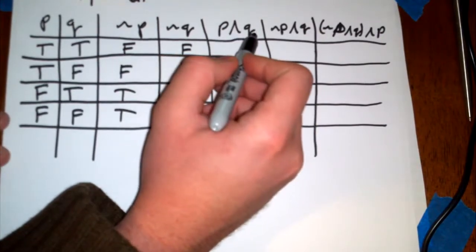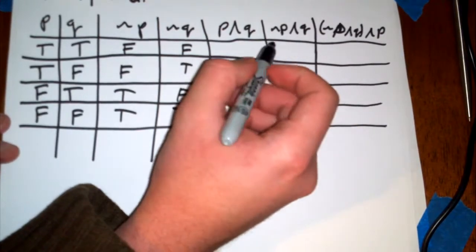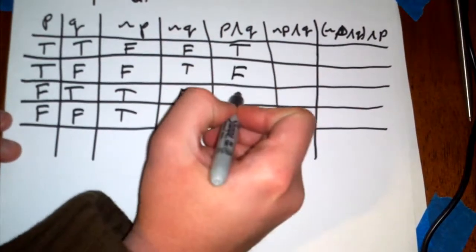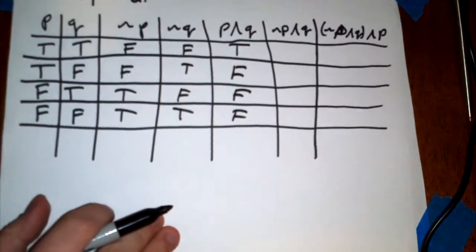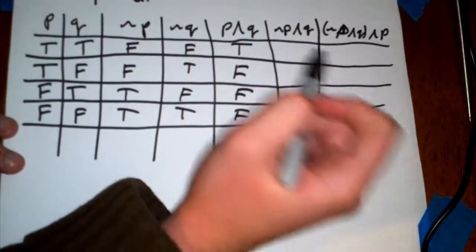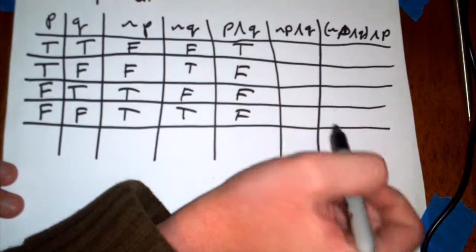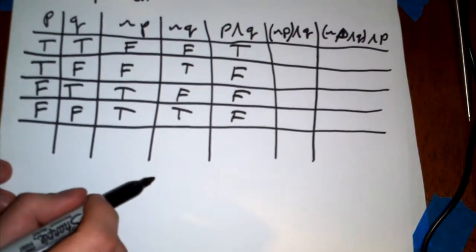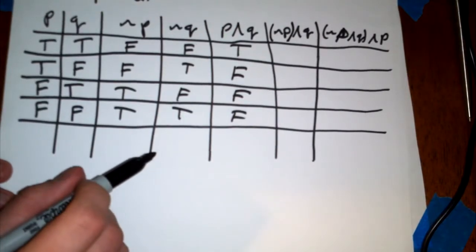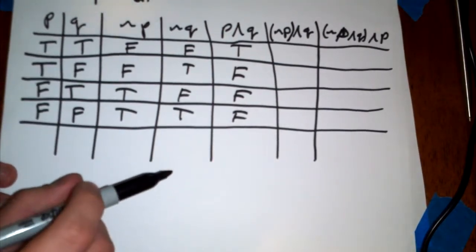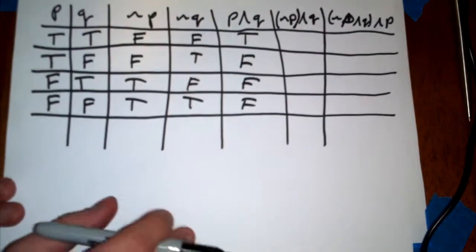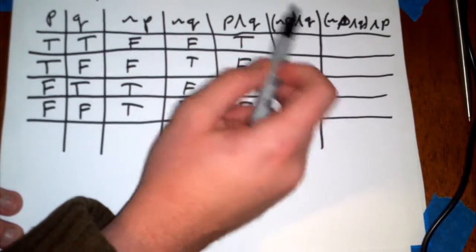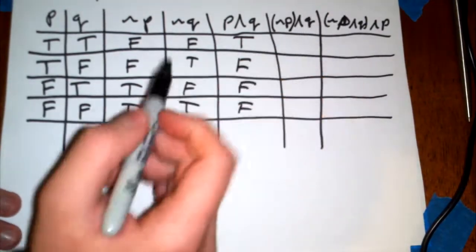And then the last one we have P AND Q. So they both have to be true in order for this to be true. So this is false. Everything else is false. And then this one is an idea of a complex one. So I showed you how we have the NOT P, and since that's the second one down in my little list of order of operations, I'm pretty sure that if you go online you can find a more complete list, but that's a basic list.